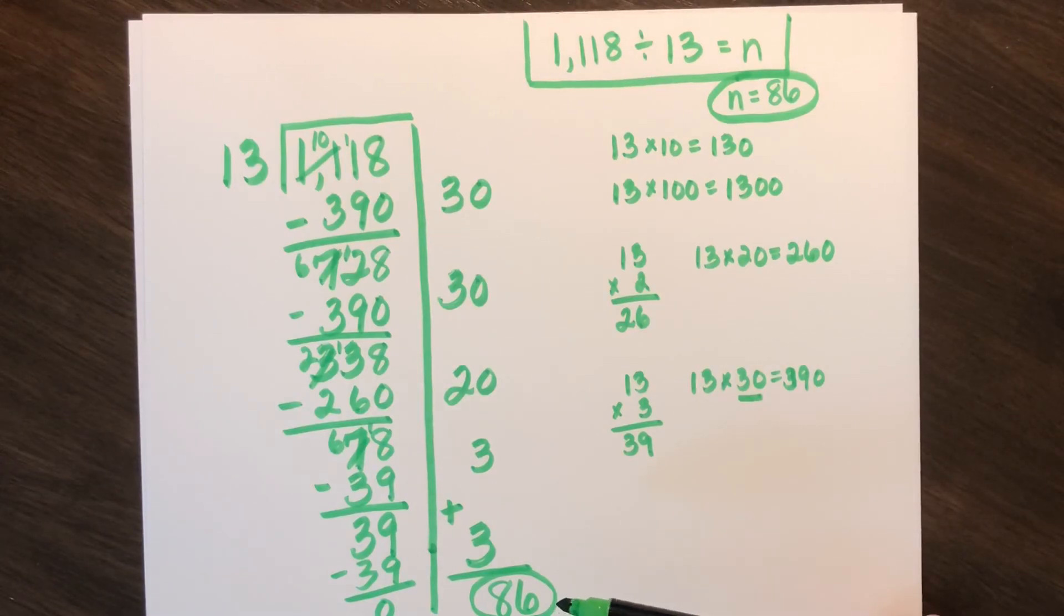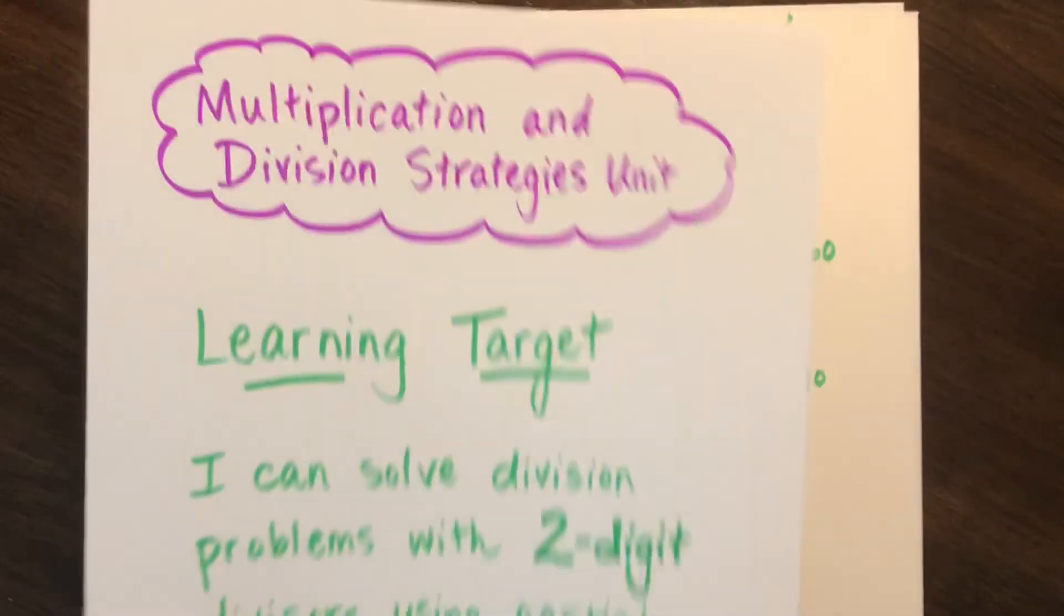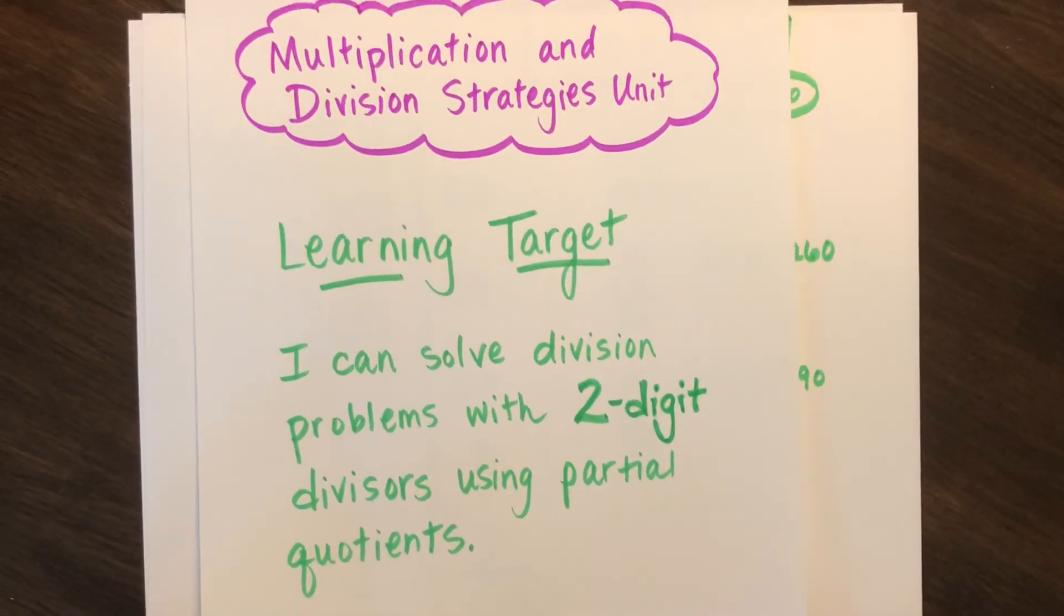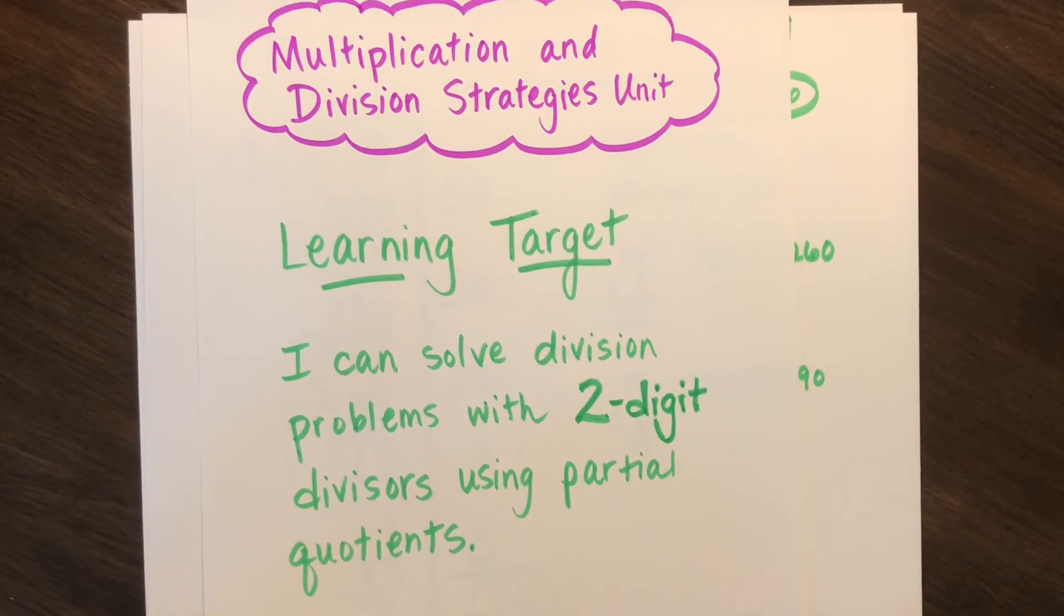So now you're going to try some on your own. Again, you're going to be solving division problems with two-digit divisors using that partial quotients method. If you need extra support, please watch the video again. Stop and re-watch as needed. And if you still need support, please reach out to your teacher.